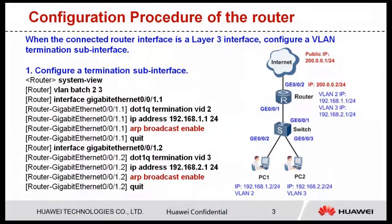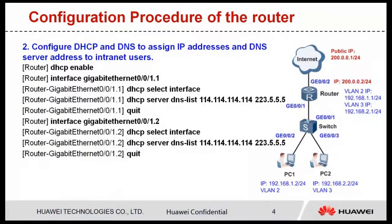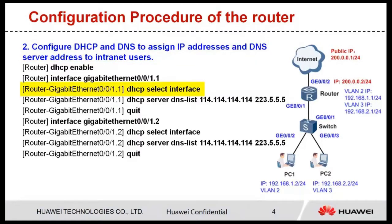Let's see the configuration procedure of the router. When the router interface is a Layer 3 interface, there are four steps. Step 1: Configure a termination subinterface. Before configuring a termination subinterface, create the corresponding VLAN, then configure a VLAN and an IP address for the termination subinterface. In earlier versions of AR V2R3C00, ARP Broadcast is disabled by default and needs to be enabled manually. In V2R3C00 and later versions, ARP Broadcast is enabled by default. Step 2: Configure DHCP and DNS to allocate IP addresses and specified DNS server addresses to users. Here, the interface address pool is used to allocate IP addresses.